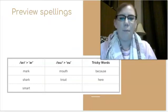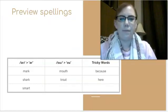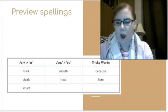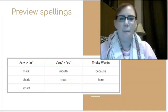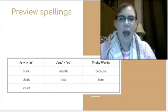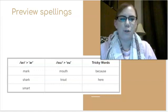Repeat after me. Mark, shark, smart. All of those words have the R sound. Mouth, trout. Both of those words have the OW sound. And then two of our tricky words, because and hear.